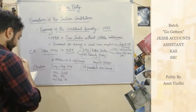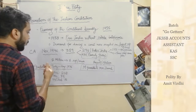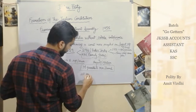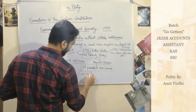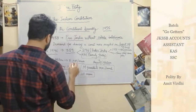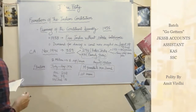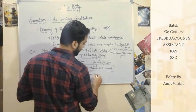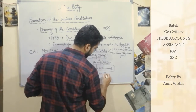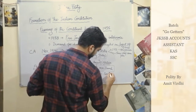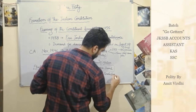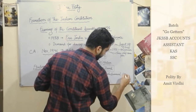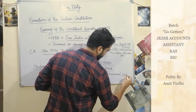The first meeting of the Constituent Assembly was attended by 211 members. The temporary president of this meeting was Dr. Sachidananda Sinha.